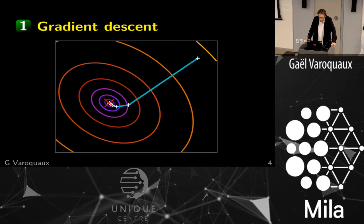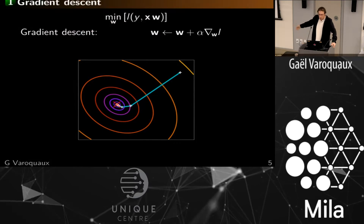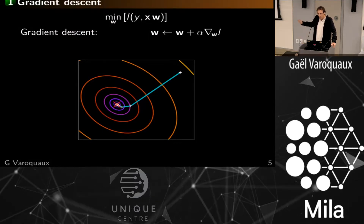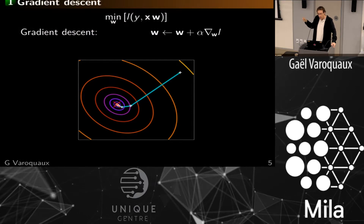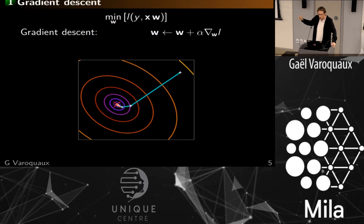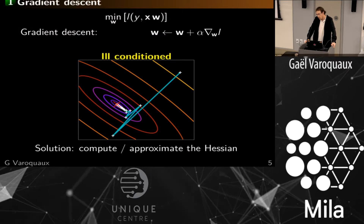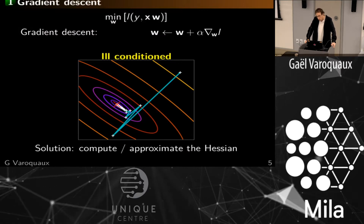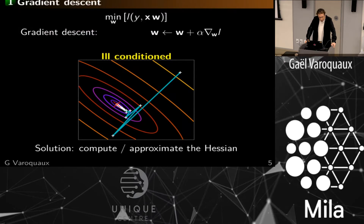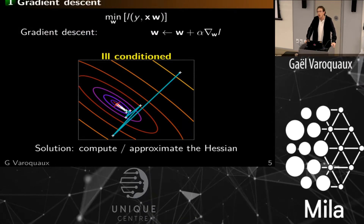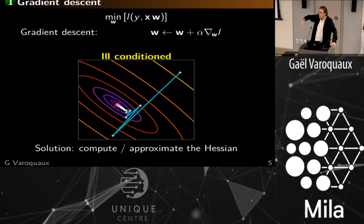Let's start with gradient descent. This is a picture of gradient descent — we're trying to optimize w to minimize some cost function, and we're just iterating by modifying w with something proportional to the gradient of the loss on w. This works well, but if we're not well conditioned the problem is that the gradient is not pointing in the direction of the minimum, even for a simple quadratic function. Then things start going bad and you get oscillating behaviors, or you need to decrease the step size a lot and get very slow convergence.